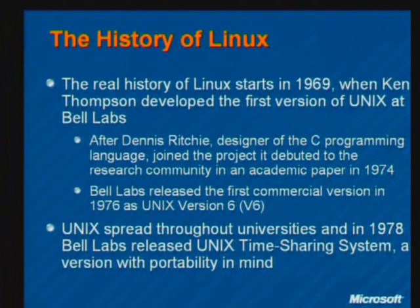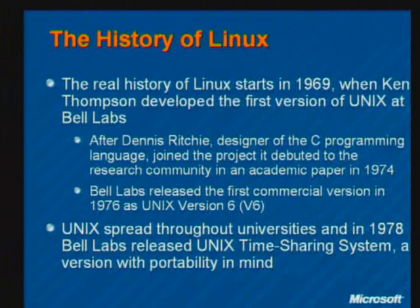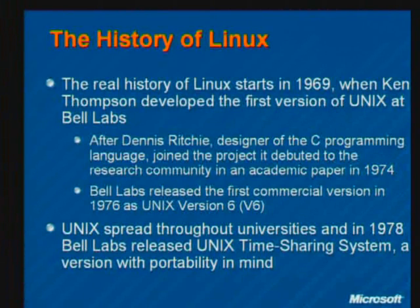Bell Labs was pretty liberal about letting universities and companies license Unix source code, and so it began to spread pretty fast. In 1978 they released a version called the Unix time-sharing system, configured so that portability would be very easy — making it straightforward for someone to port Unix to a different kind of processor. And that enhanced the proliferation as well.